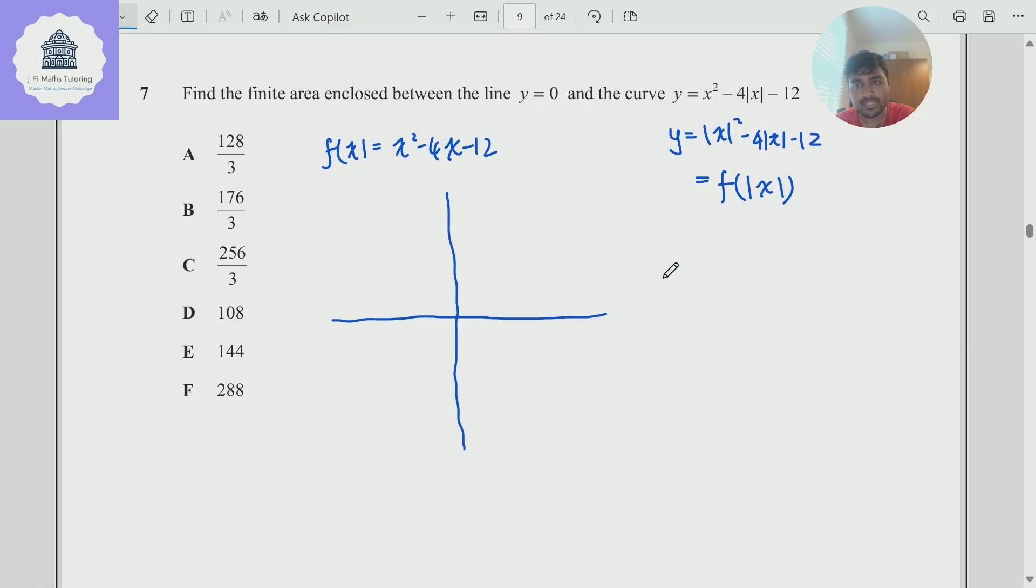So that's my x, y axis. So now if I was to sketch f of x, if I just quickly factorize that, that's x minus 6 times x plus 2. And so that means it has roots at negative 2 and at 6. So if I was to sketch f of x, it would just be a parabola kind of like that.